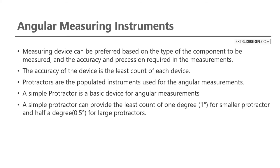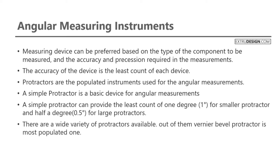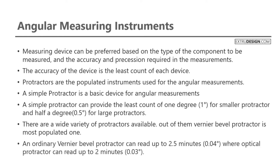There are a wide variety of protractors available, and out of them the Vernier Bevel Protractor is the most popular one. An ordinary Vernier Bevel Protractor can read up to 2.5 minutes, in other words 0.04 degrees. Whereas an optical protractor can read up to 2 minutes, in other words 0.03 degrees.